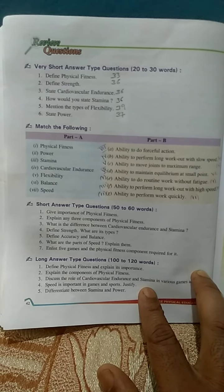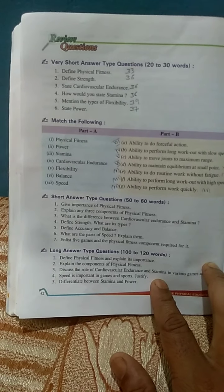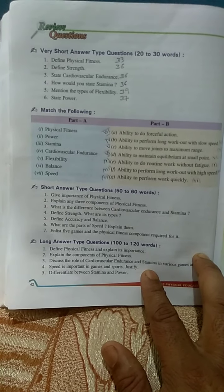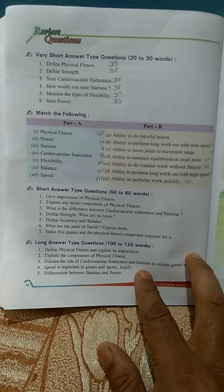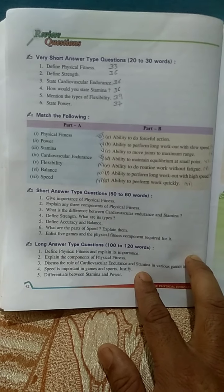The next is match the following, part A. Physical fitness, power, stamina, cardiovascular endurance, flexibility, balance, speed. The answers are as follows. Physical fitness - E, the ability to do routine work without fatigue.